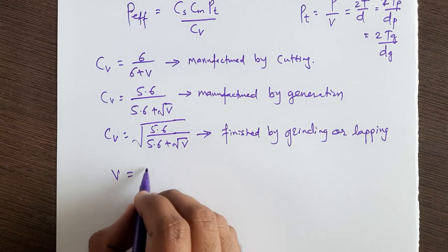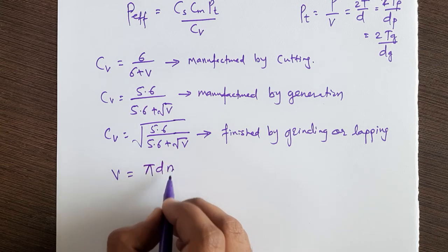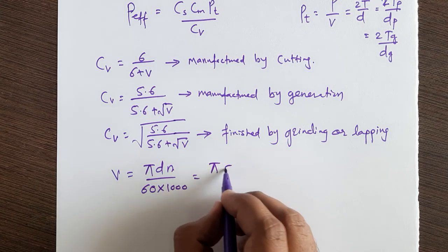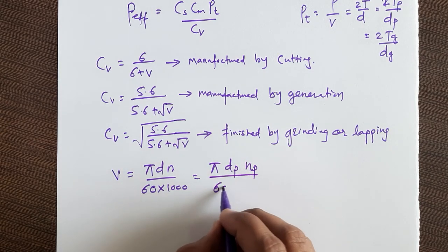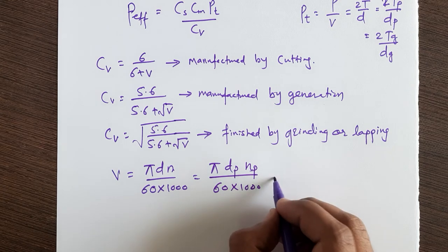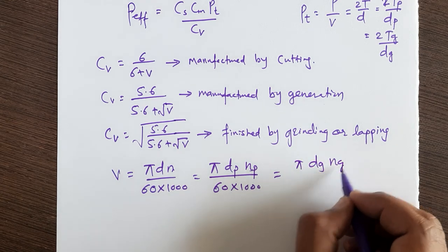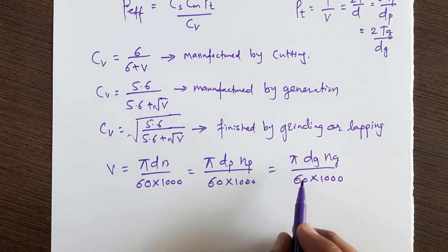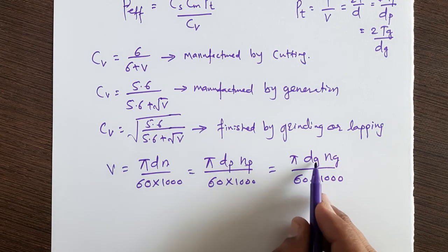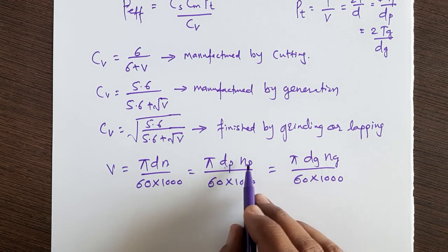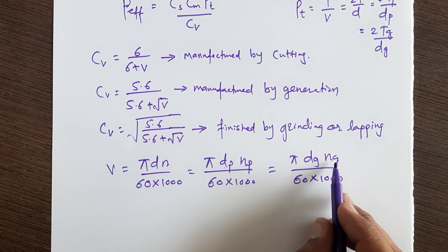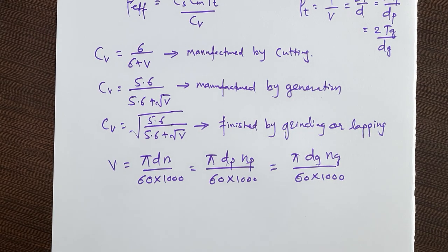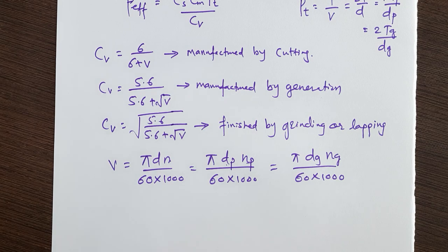Pitch line velocity V is given by: V = (π × dp × Np) / (60 × 1000) or V = (π × dg × Ng) / (60 × 1000), where dp and dg are the pitch circle diameters of pinion and gear, and Np and Ng are the speeds of pinion and gear in RPM. This concludes the first method; the second method follows.